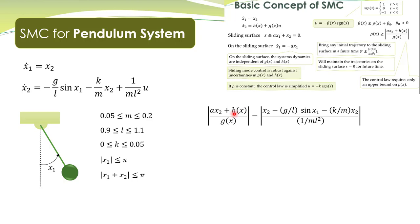What was h(x)? h(x) is minus g over l sine(x₁) minus k over m times x₂. And what is this? This is g(x), which is written over here.